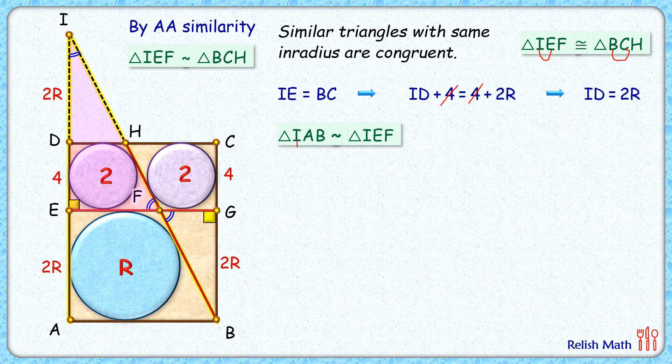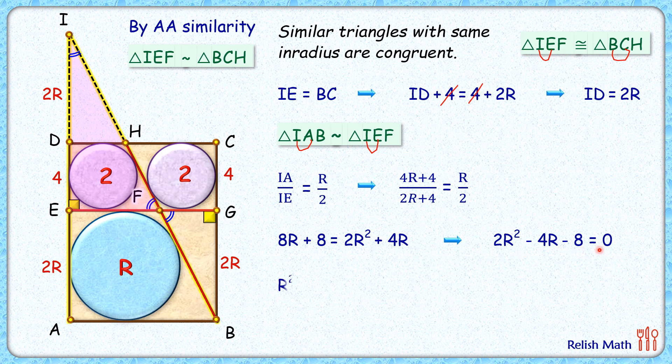That is IA upon IE. This ratio is equal to the ratio of inradius, that is capital R upon 2. Putting IA as 4R plus 4, IE is 2R plus 4, and this is equal to R upon 2. Simplifying it by cross multiplication, 2 goes on the other side. We get 8R plus 8 equals 2R squared plus 4R. Let's take all the terms on one side. We'll get equation in this form. Now let's divide this complete equation by 2. We'll get our quadratic in this form: R squared minus 2R minus 4 equals 0.